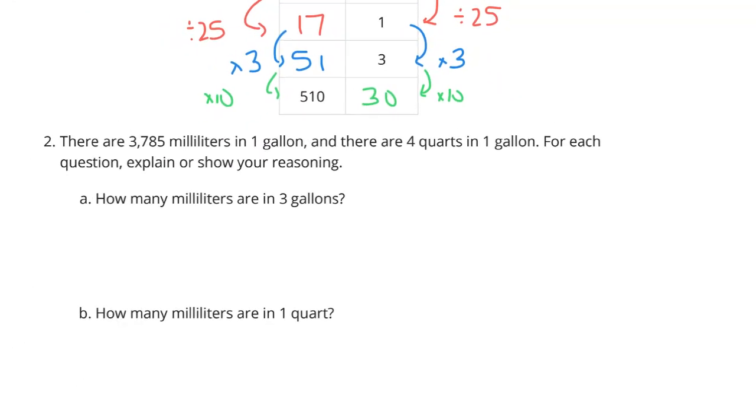Question 2. There are 3,785 milliliters in one gallon. There are 4 quarts in one gallon. For each question, explain or show your reasoning. How many milliliters are there in three gallons?